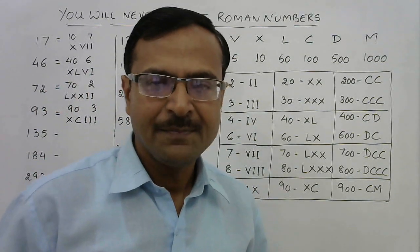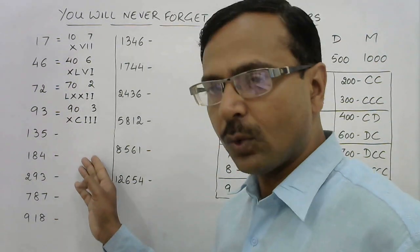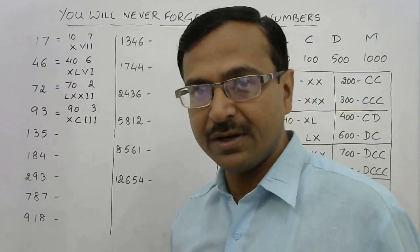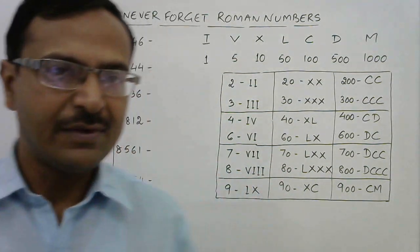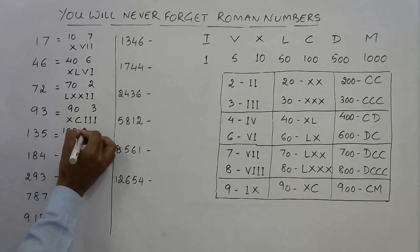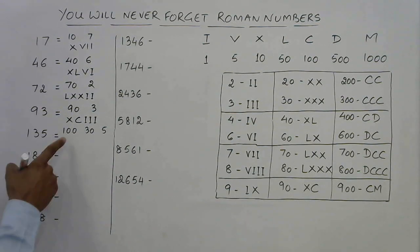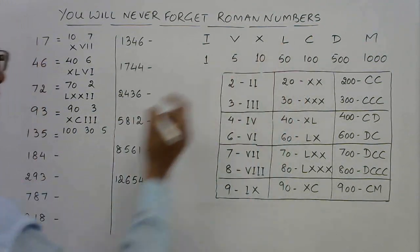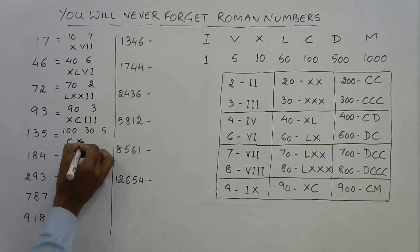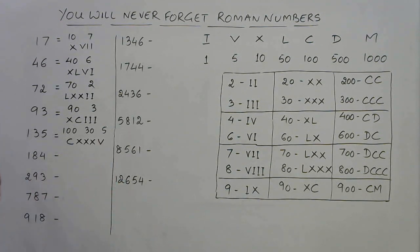Three-digit numbers work the same way with an added hundreds digit. Take 135: 100 is C, 30 is XXX, and 5 is V, so 135 is CXXXV.